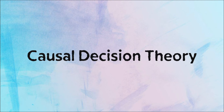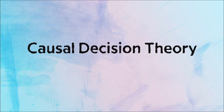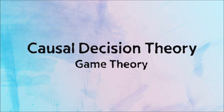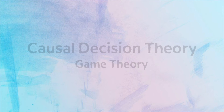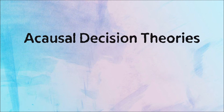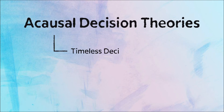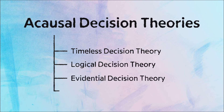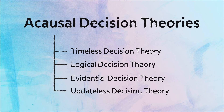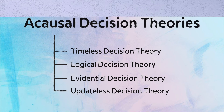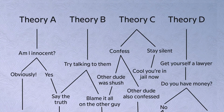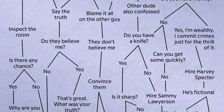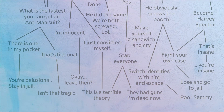There are several different decision theories in the world. Causal decision theory is the most commonly known one and results in decisions very similar to that in game theory — it is considered the academically standard theory. But there are many other acausal decision theories out there, such as the timeless decision theory, logical decision theory, evidential decision theory, updateless decision theory, etc. Each of these have their own merits and arguments, follow different rules, and result in different outcomes when applied to the same situations.